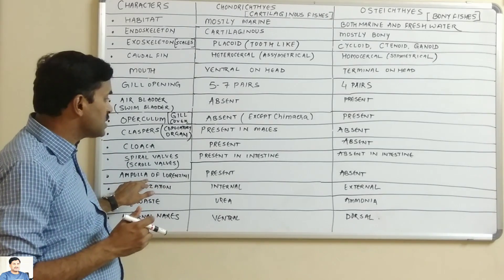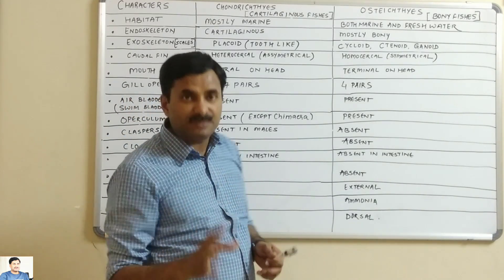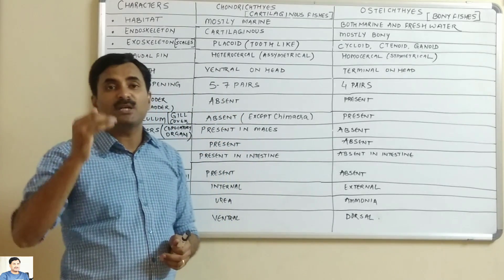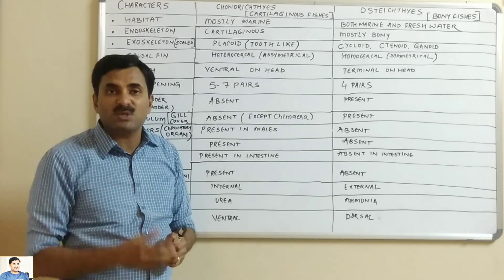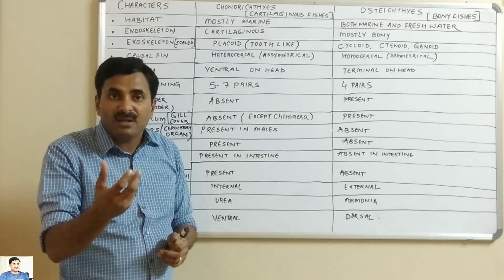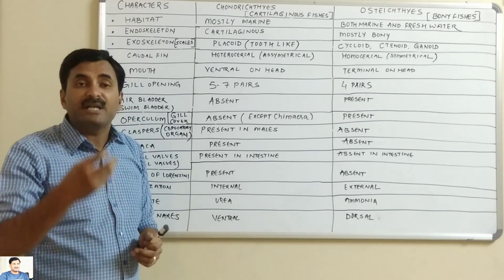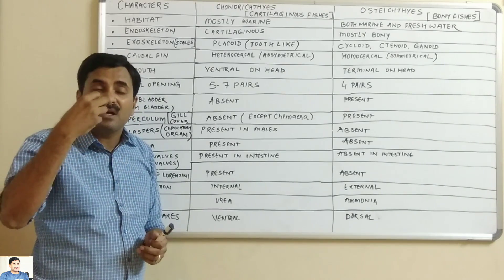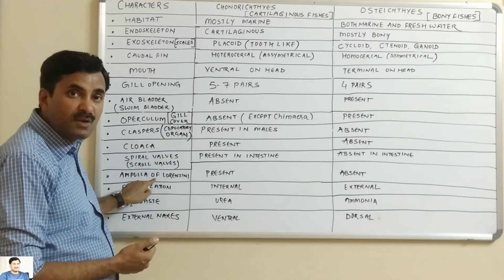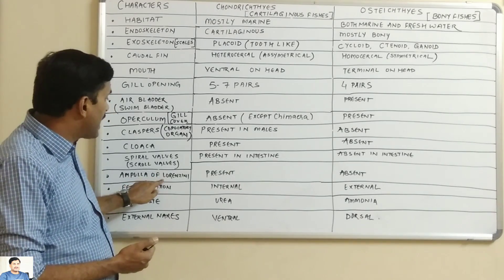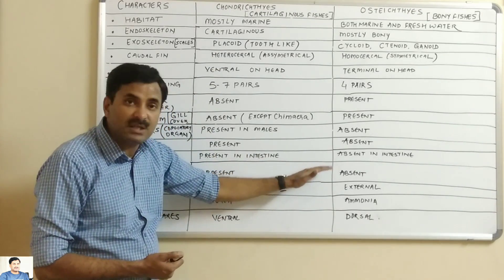Now the ampullae of Lorenzini — a very important structure present on the dorsal surface of the head. It acts as a thermoreceptor and an electroreceptor. It detects salinity and pressure in water. The ampullae of Lorenzini is a feature of cartilaginous fishes, while it is totally absent in bony fishes.